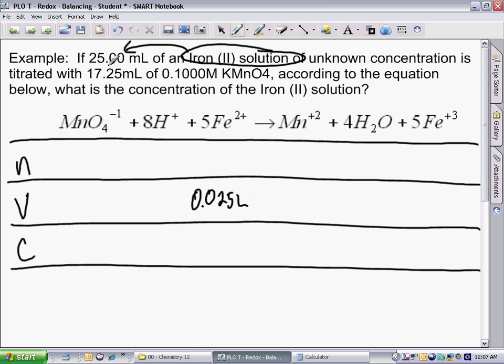If unknown concentration is titrated with 17.25 mL of 0.100 M KMnO4, KMnO4 has a one-to-one ratio, so that will be the same as the concentration of MnO4-. So our concentration is 0.1 M, and our volume is 0.01725 liters.